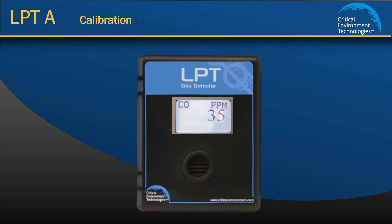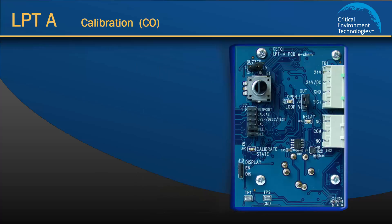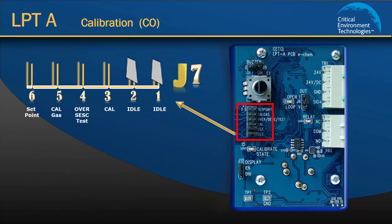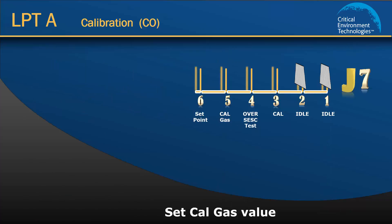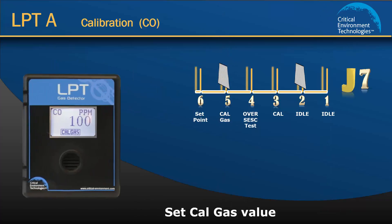The first step in calibration is to set the cal gas value. Open the LPTA and find the jumper bank on the left side of the board. To set the cal gas value, move one of the idle jumpers to position 5, cal gas.